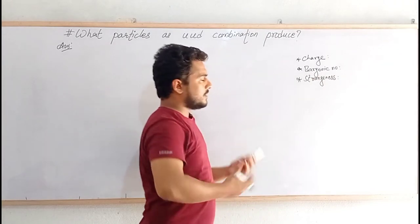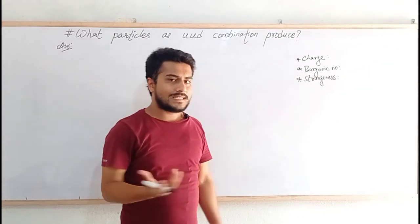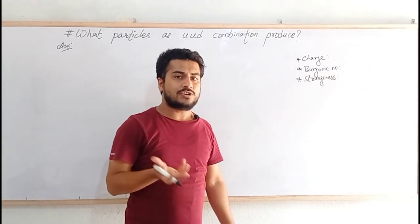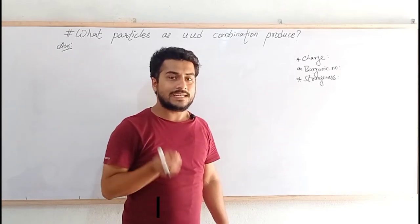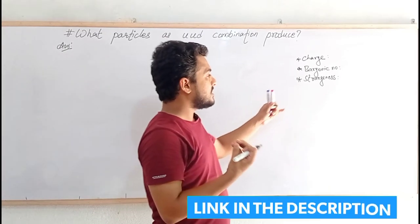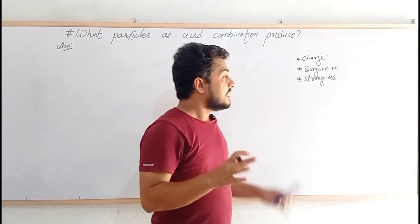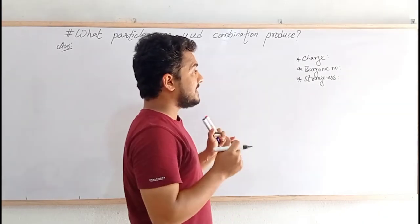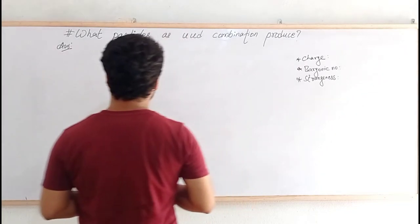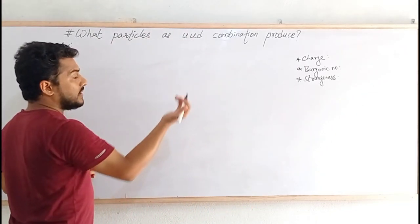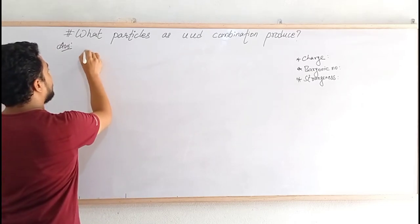We may also discuss other different properties that we have studied earlier in our previous video, which link you can get in the description box. We have discussed about bottomness, toughness, and other different properties. So basically, all these three properties are needed over here. We will try to calculate charge, baryonic number, and strangeness of the UUD combination.